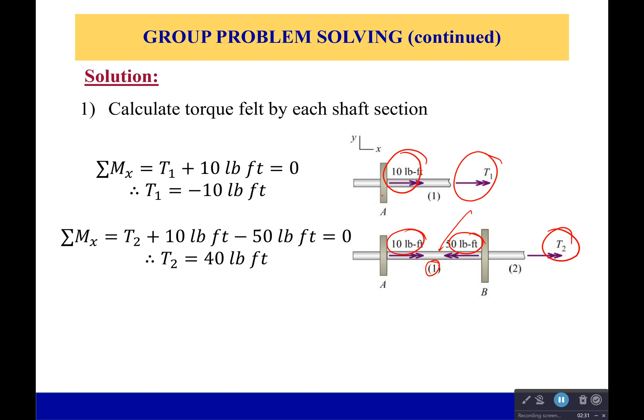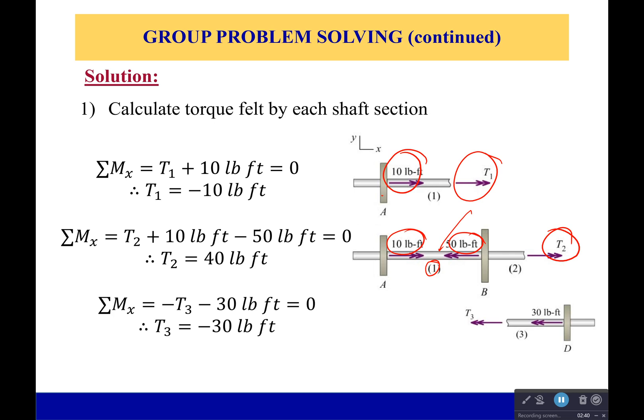All these are just vectors — for moments, they have a vector that passes along the axis they are wrapping around. And finally, in section three, we cut it and we get 30 pound-foot pointing to the left. Torque three would point away, but it's actually going to be clockwise because it's going the opposite direction. So it's negative 30 pound-foot.